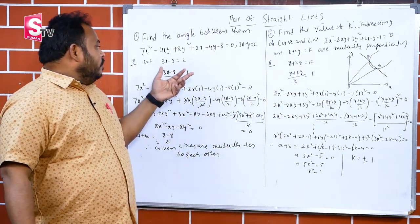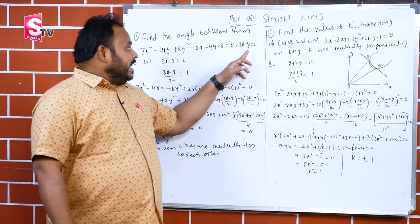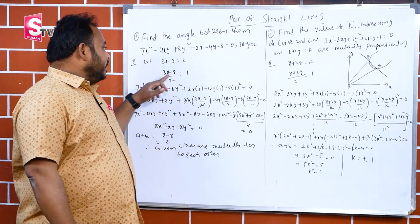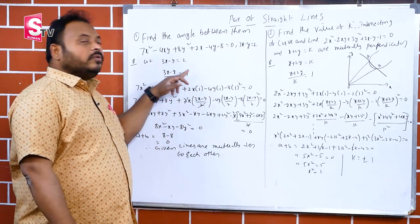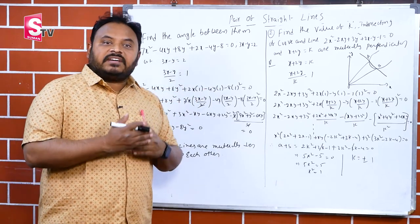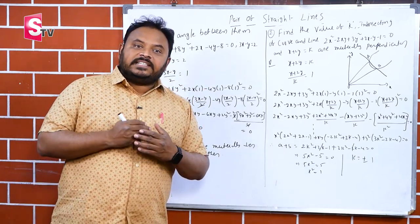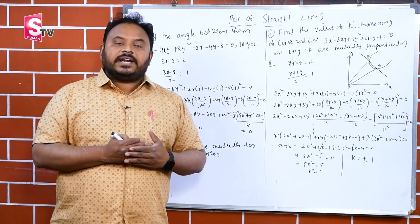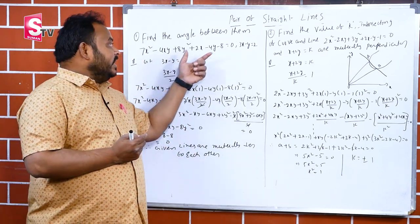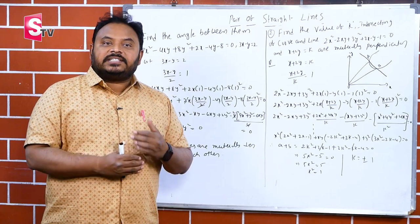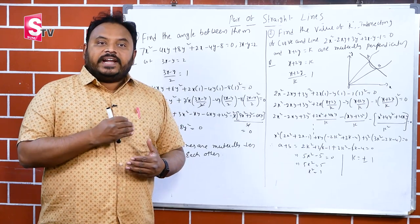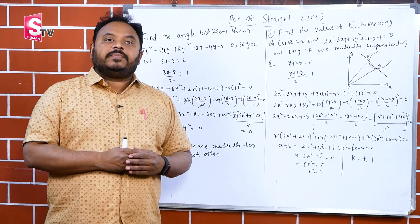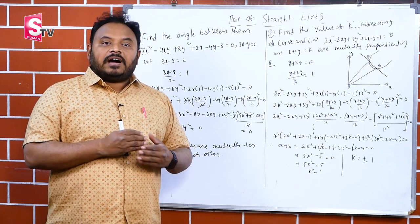First, we take the line 3x minus y equals 2, which can be written as (3x minus y)/2 equals 1. We will work in terms of 1. What is homogenization? Homogenization means the powers must be equal throughout the equation.